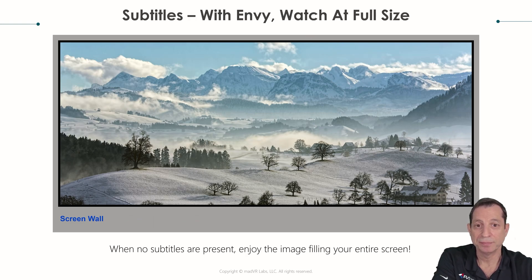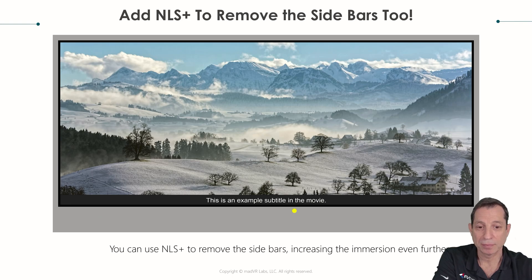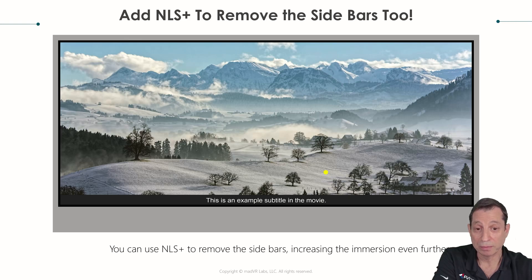With the Envy, you're able to watch full screen, and then when the subtitles come, we simply move them up into the black bar — we bring the black bar back and put the subtitles in there. Whether you need one line, two lines, or three lines of subtitles, it brings back just the same amount of black bar needed to fit that content.